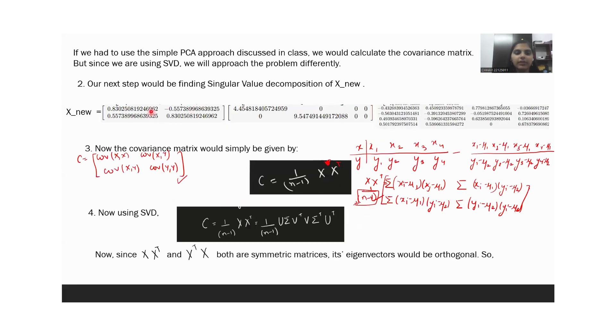Now we will find the SVD decomposition of this mean-centered dataset. We can observe that C, the covariance matrix we require, is 1 by N minus 1 times X times X transpose.